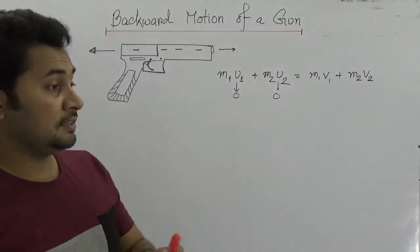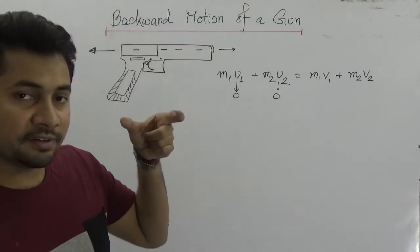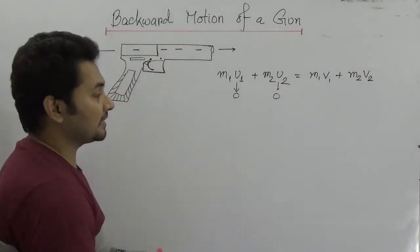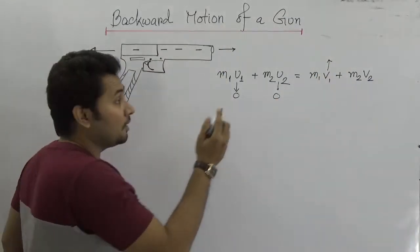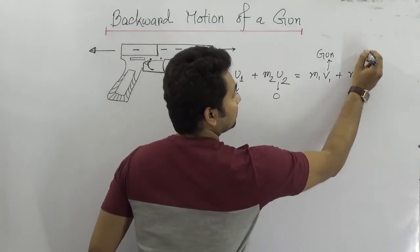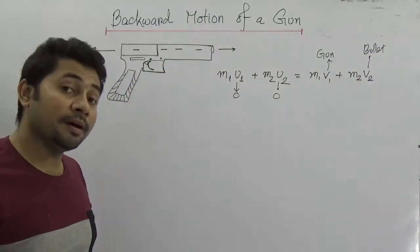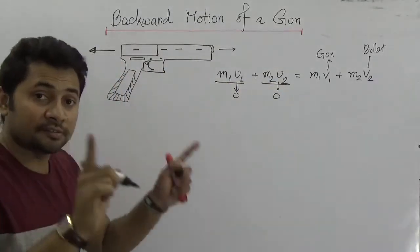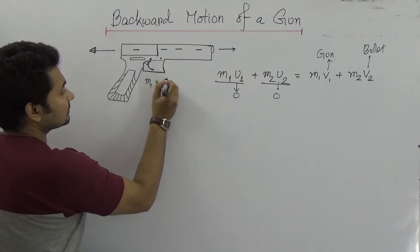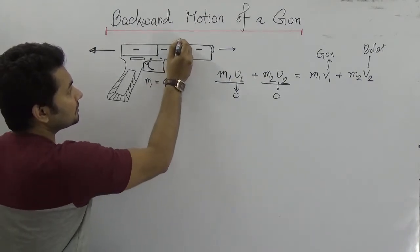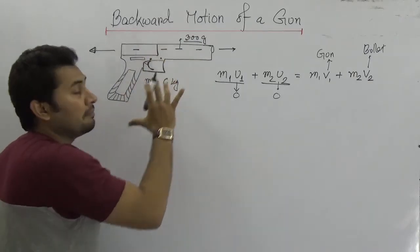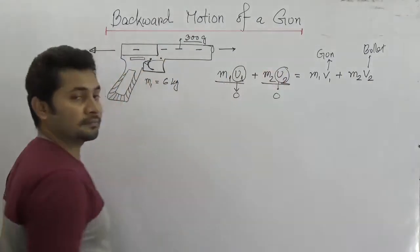Before pulling the trigger, when the trigger is pulled it directly moves the bullet forward and the gun gets pushed backwards. We can say there is a velocity of the bullet. V1 is the gun and V2 is the bullet. What will be the initial momentum of both? Suppose the gun mass is 6 kg and the bullet mass is suppose 300 grams. Both momenta would be 0 since there is no initial velocity.